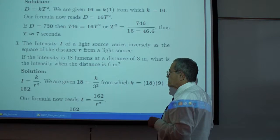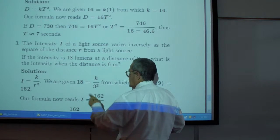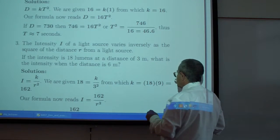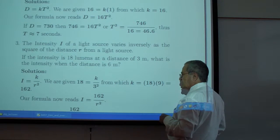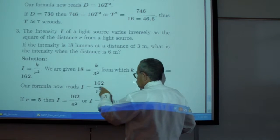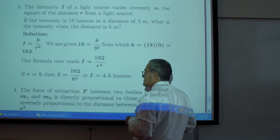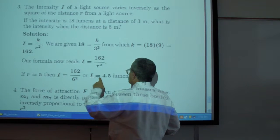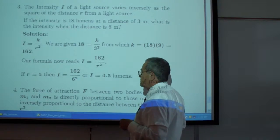You have the intensity problem. I is K over R squared. I is 18 when R is 3. So K comes out to 162. And I is 162 over R squared. And if R is equal to 5, I is 162 over 6 squared or 4.5 lumens.